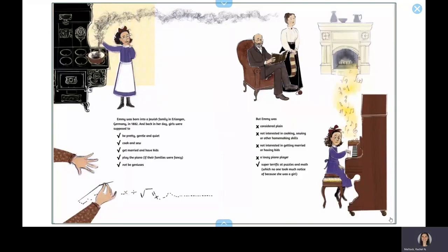Emmy was born into a Jewish family in Erlangen, Germany in 1882, and back in her day, girls were supposed to be pretty, gentle, and quiet, cook and sew, get married and have kids, play the piano if their families were fancy, not be geniuses.